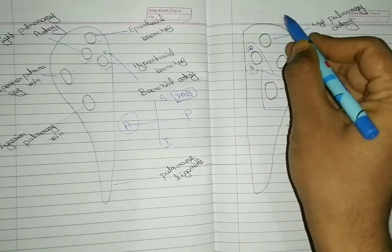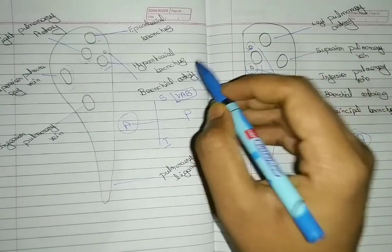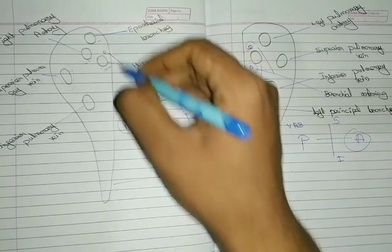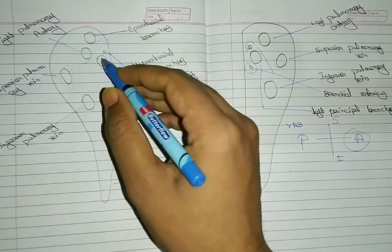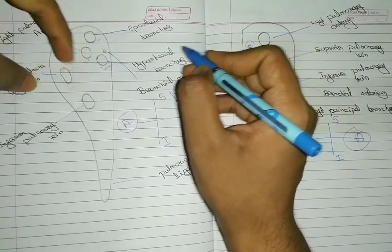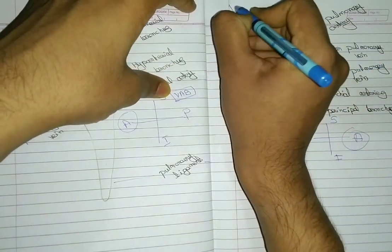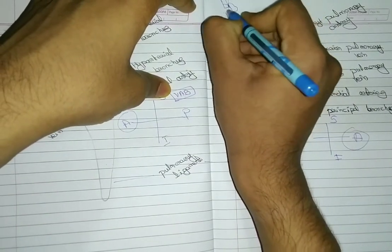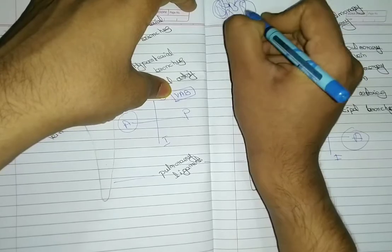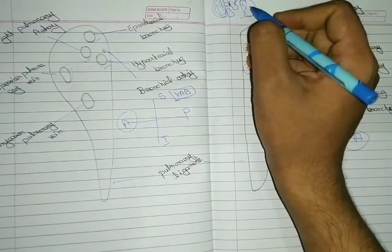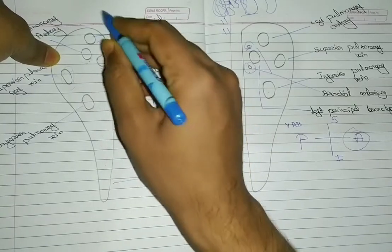Now we will study the anterior relations. Anteriorly, the structure which supplies the diaphragm is the phrenic nerve, along with anterior pulmonary plexuses. In addition, on the right side there is the Superior Vena Cava. Veins are always in relation with the right lung, and arteries are in relation with the left lung. The Superior Vena Cava is in relation with the right lung.